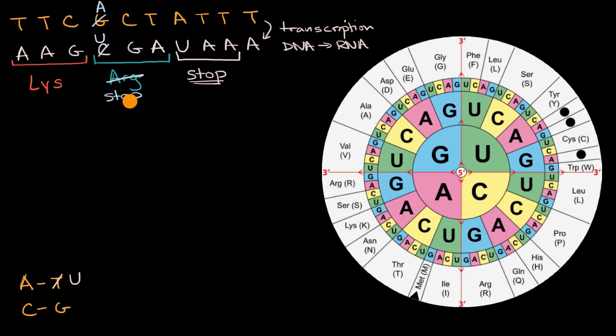Now another type of mutation that typically has a fairly significant effect is a frameshift mutation. And that's where something gets inserted or deleted and shifts everything. So for example, instead of the A being swapped in for the G, what if the A got inserted here? So then our sequence would look like this.